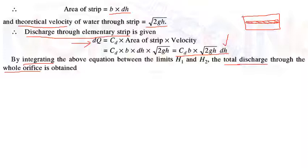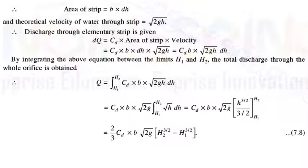With limits H1 to H2, the constants CD, B, and √(2G) are taken outside the integral. Integrating H^(1/2) gives H^(3/2) / (3/2). So the total discharge becomes Q = (2/3)·CD·B·√(2G) · [H2^(3/2) − H1^(3/2)].